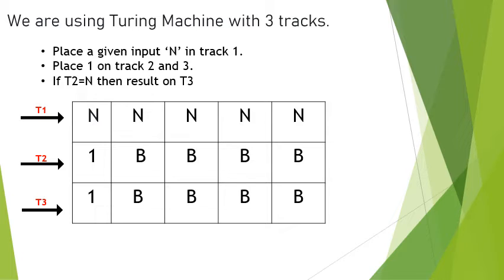In this problem, we are using a Turing machine with three tracks. The steps to be followed are: place a given input N in track 1, place the value 1 in track 2. Next, if T2 (in track 2) is equal to N (the value we gave in track 1), then the result is on track 3.